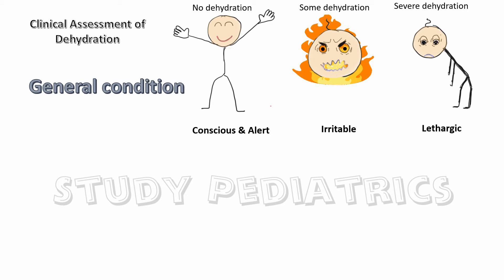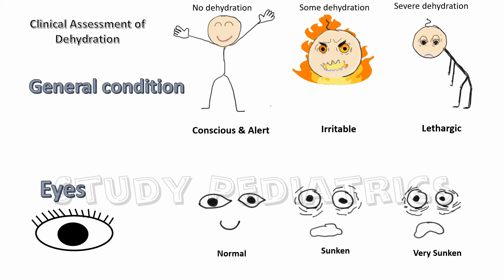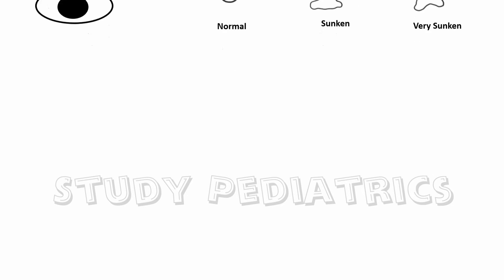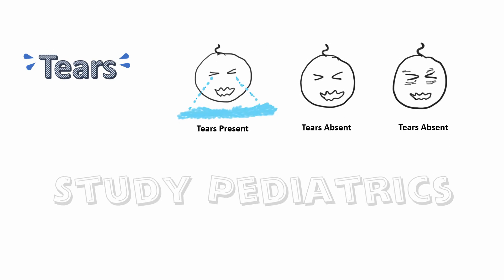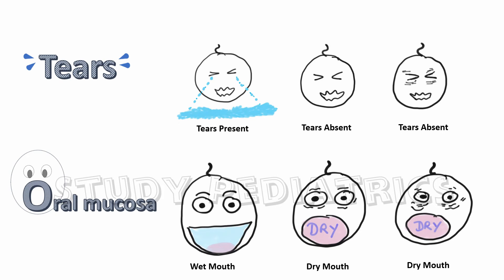The second parameter is eyes: normal appearance if no dehydration, sunken if some dehydration, and very sunken if severe dehydration. The third parameter is tears: a baby with no dehydration has tears, but babies with some or severe dehydration do not. The fourth parameter is oral mucosa — wet in no dehydration, but dry in some and severe dehydration.